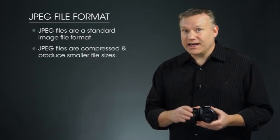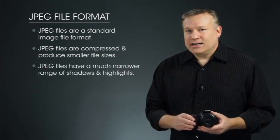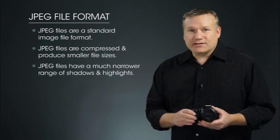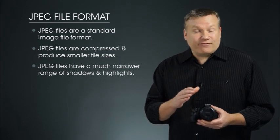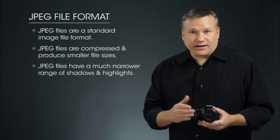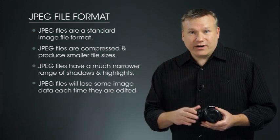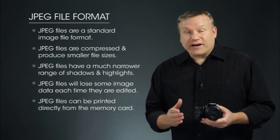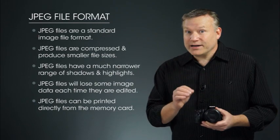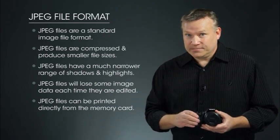JPEG is a compressed file format, which means that not all of the image data is actually saved. Because they're compressed, JPEGs are much smaller in file size. JPEGs have a more narrow range of shadows and highlights, and will lose some image data each time they're edited. Finally, JPEG files are processed by your camera and are able to be printed directly from the memory card. Because JPEG images require less time when editing on the computer, use a high-quality JPEG setting for everyday picture-taking and snapshots. If you know ahead of time that you're going to be extensively editing your images, choose the RAW plus JPEG format.